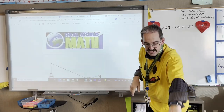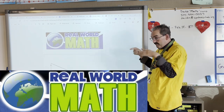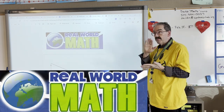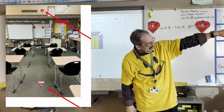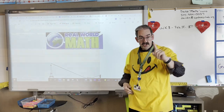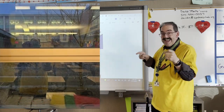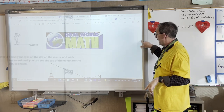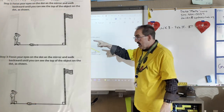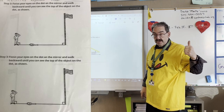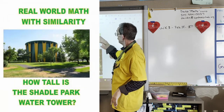Welcome back. It's Monty, it's Shadle Park, it's Geometry. This week we've been using the mirror in the classroom. We found out how tall this ceiling was. We found out how tall the third floor at Shadle Park was by not going over there, using mirrors. Now, let's do some real-world math and go outside and try to calculate how tall the Shadle Park water tower is — without knowing anything.